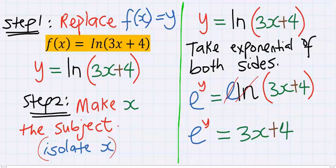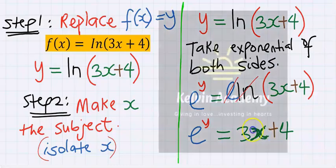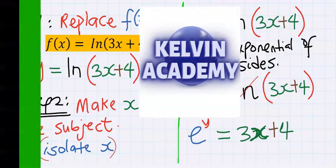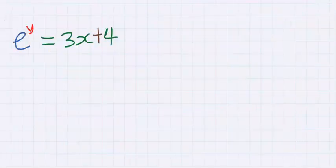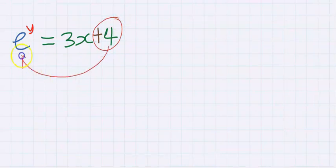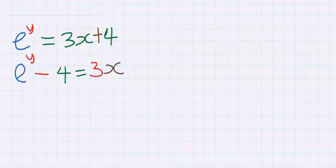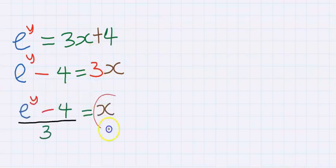Remember, our aim in step two is to make x the subject. Next, we take the plus 4 across the equal sign and it becomes minus 4. Then we take the 3 across and it divides everything, so x is now isolated. We have achieved the aim of step two.